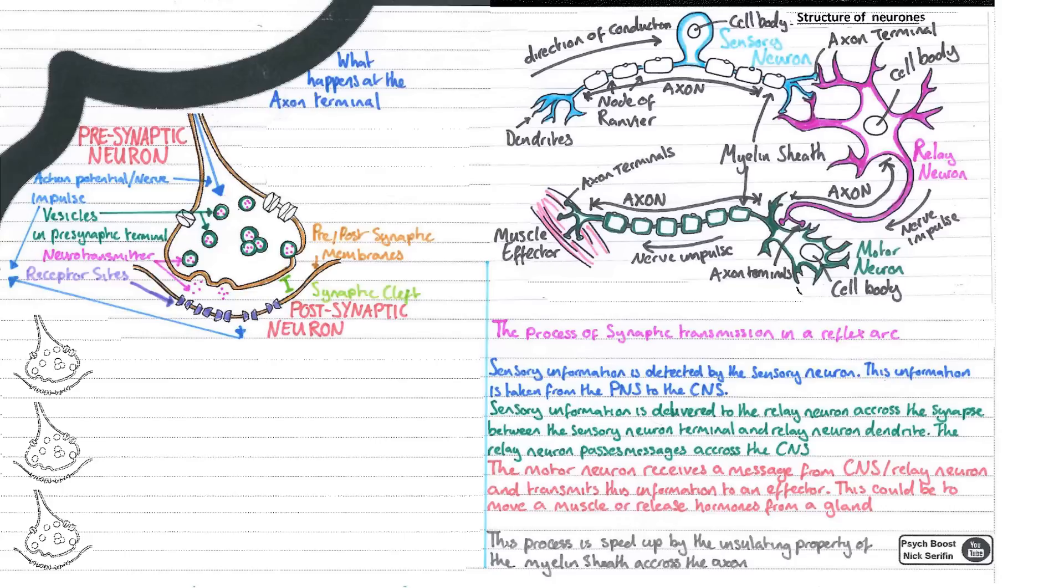Once the nerve impulse reaches the axon terminal, these vesicles are going to be pushed out, they're going to merge with the pre-synaptic membrane. The neurotransmitter is then going to be released into the synaptic cleft and it's going to drift, not very far, just across to the receptor sites. Those receptor sites are going to detect the neurotransmitter and then we might see an action potential carry on. So let's go through each of those stages in as much detail as we're going to need.